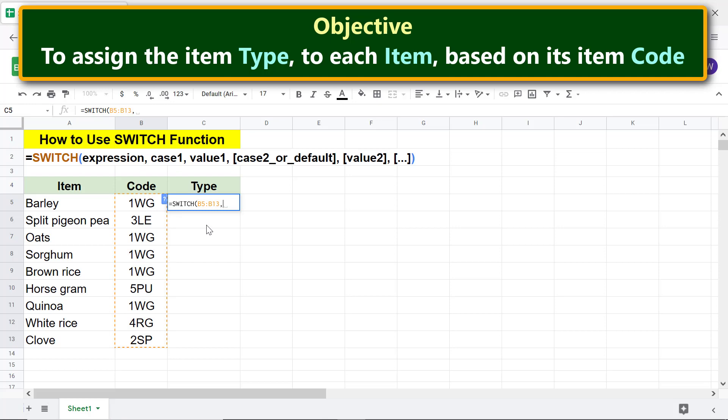Type comma. For case 1, type the text between double quotes. Type comma. For value 1, type the item type between double quotes.